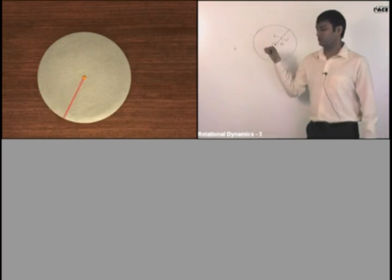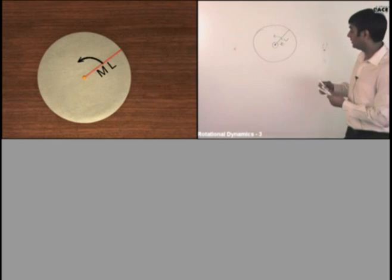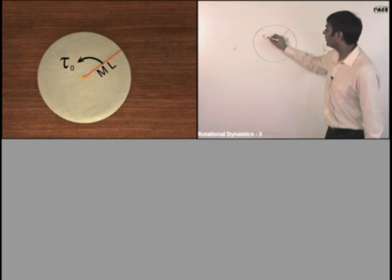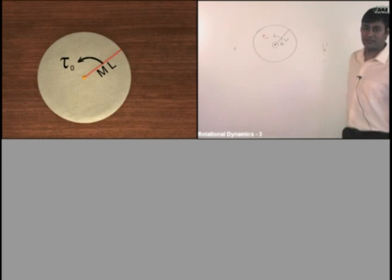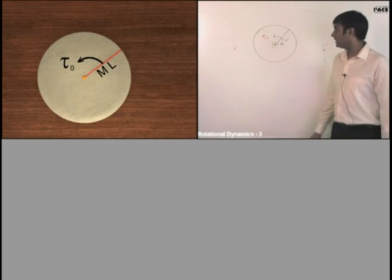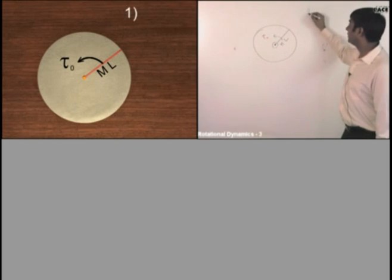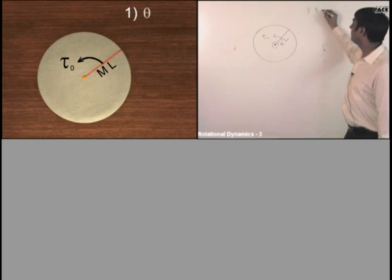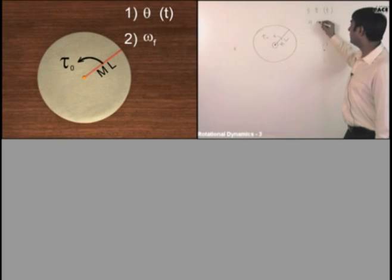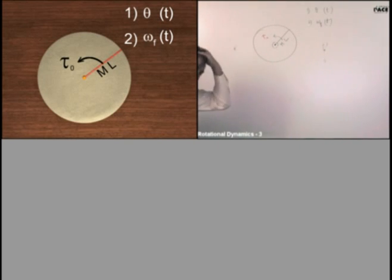This rod is rotating anti-clockwise — the direction is towards you. There is a torque acting on this: tau naught, which is given. M is given, L is given, and torque is constant. It starts from rest, so the initial angular velocity is zero. You have to find the angle travelled in time t, and the final angular velocity after time t. We are doing rotational kinematics.